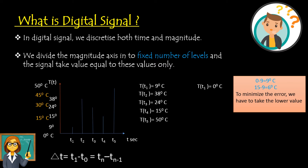For the next value: at time T2 seconds, the temperature is 38°C. Looking at the graph, it lies between 30°C and 45°C — both permissible values. We round it off to the lowest value, so the digital signal shows 30°C at T2. For T3 seconds, the actual value is 24°C, which lies between 15°C and 30°C, so the digital signal takes 15°C.